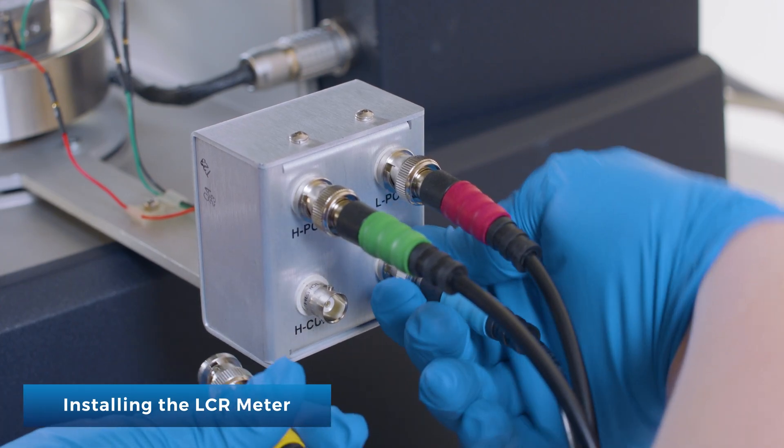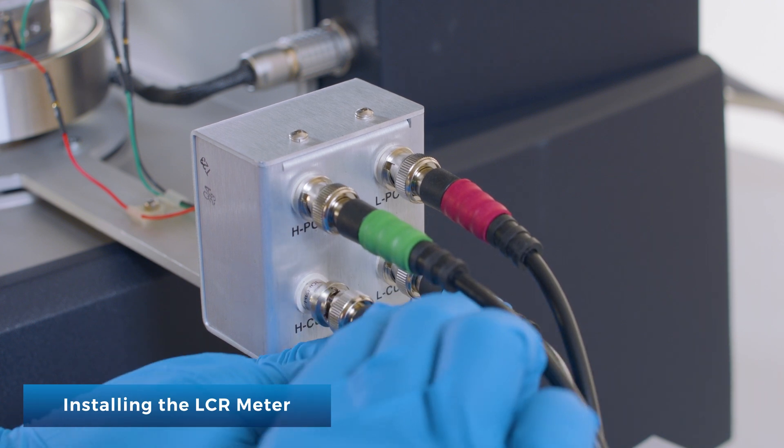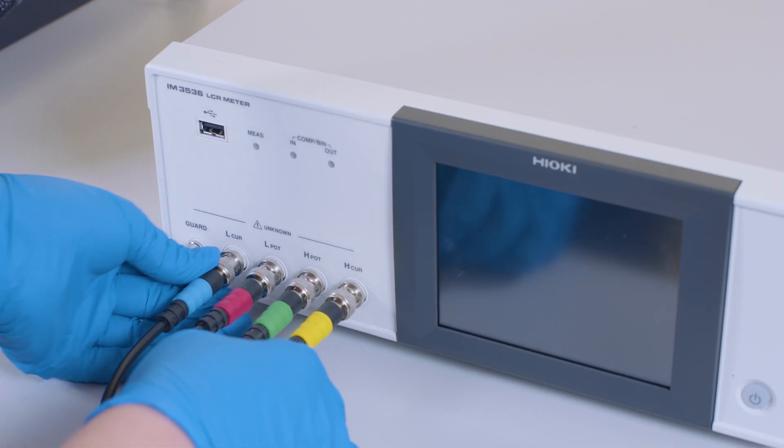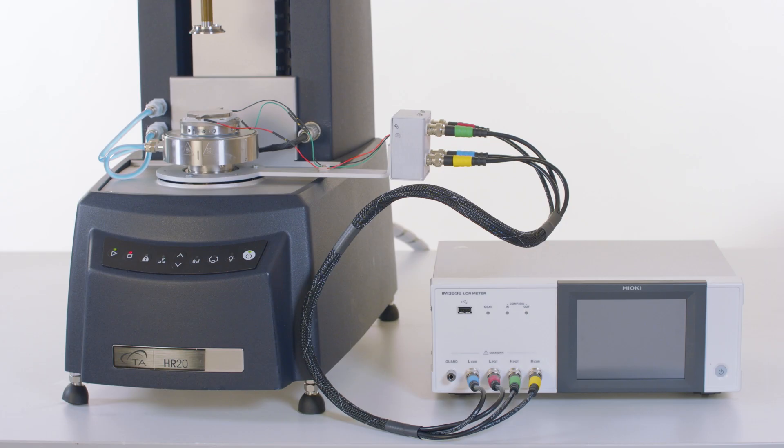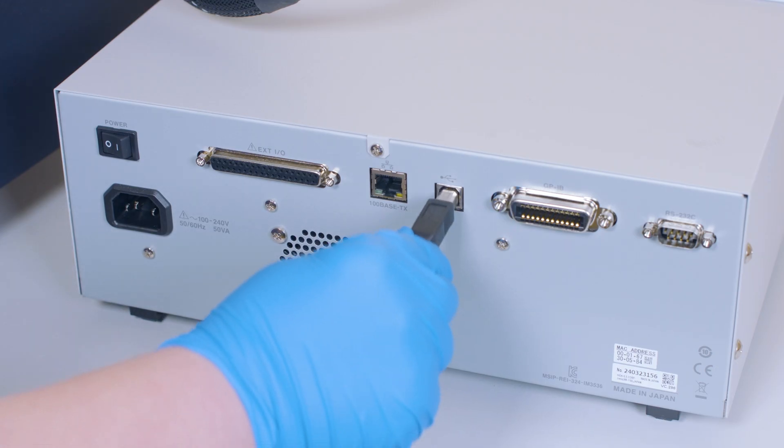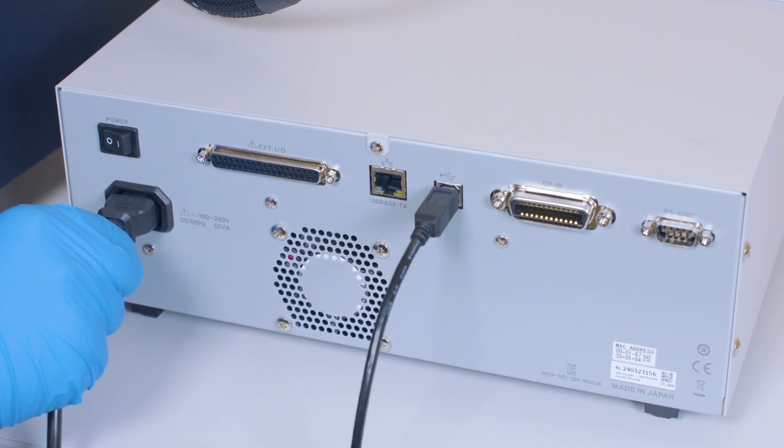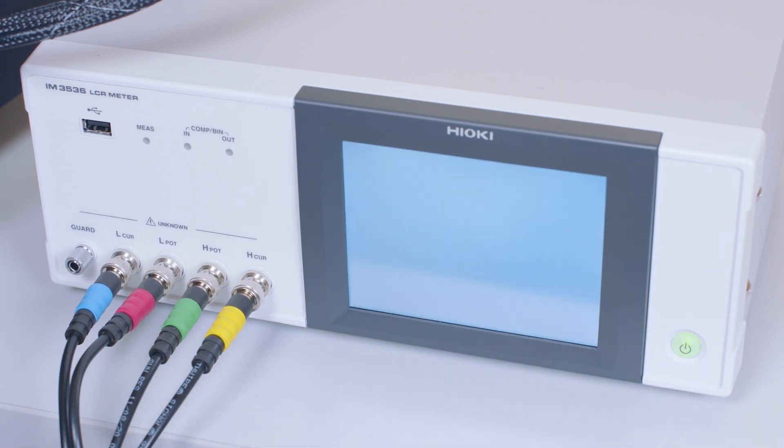Connect the coaxial cables from the junction box to the LC meter front panel. The cables are color-coded so that corresponding signals may be matched between the junction box and LCR meter. Connect the USB cable from the back of the LCR meter to the computer. Plug the LCR power cable into a power source. With TRIOS running, turn the LCR meter power on.